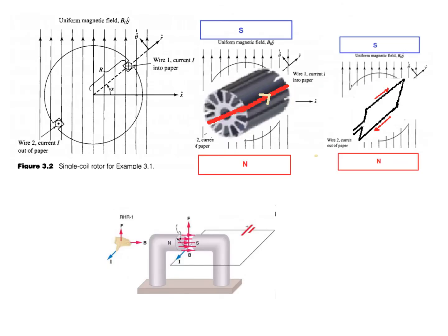A couple more clarifications. This is the rotor, and if you consider just the single coil, the cross symbol at the top means the current is going into the page, while the dot at the bottom means the current is coming out of the page. Keep that in mind.